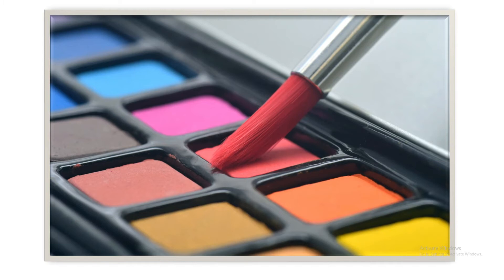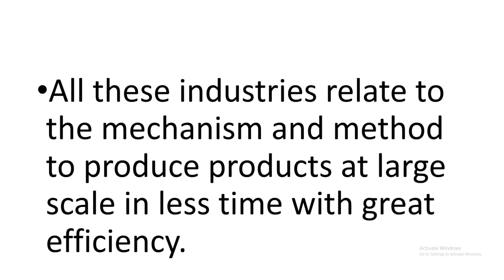اس طرح سے اور بھی بہت ساری industries ہیں جن میں different methods and technologies کو use کرتے ہوئے کم سے کم پیسے میں اور کم سے کم وقت میں large quantity میں products کو بنایا جاتا ہے۔ All these industries relate to the mechanism and method to produce products at large scale in less time with great efficiency. I hope students آپ کو industrial chemistry کی basic definition سمجھ میں آگئی ہوگی۔